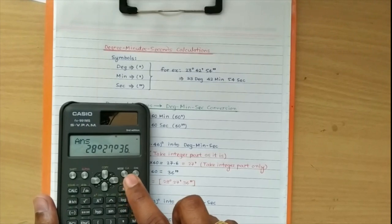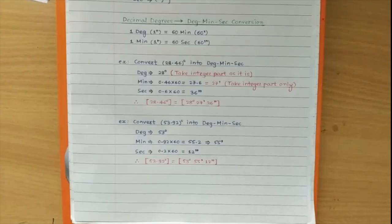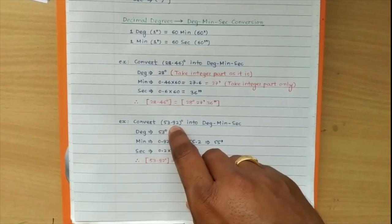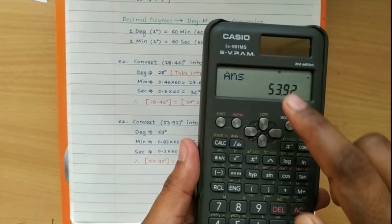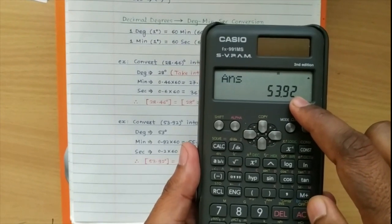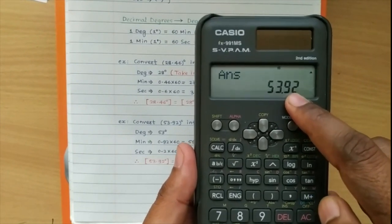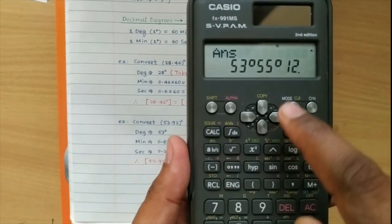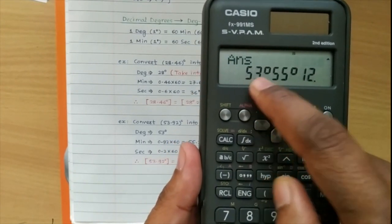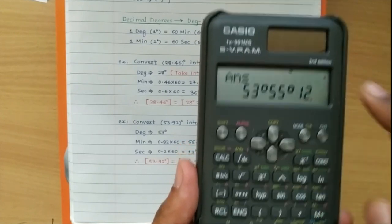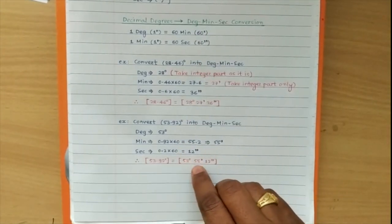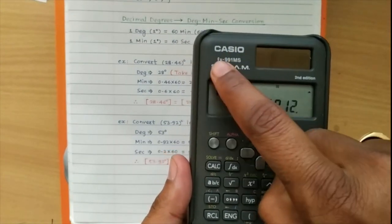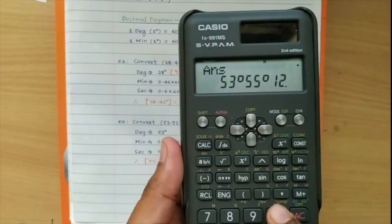Similarly, for the second angle 53.92 degrees, after doing calculations you get the same angle in degrees. Press the button again and you get 53 degrees, 55 minutes and 12 seconds — confirming our earlier calculation. In this way, using the 991 MS series calculator you can perform these conversions.